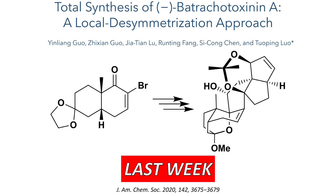Last week we looked at the first half of the Leu synthesis of Batrachotoxinin A. This started with the Hajos-Parrish ketone and built up the core of the polycyclic structure to produce the diacetal, which is shown here.